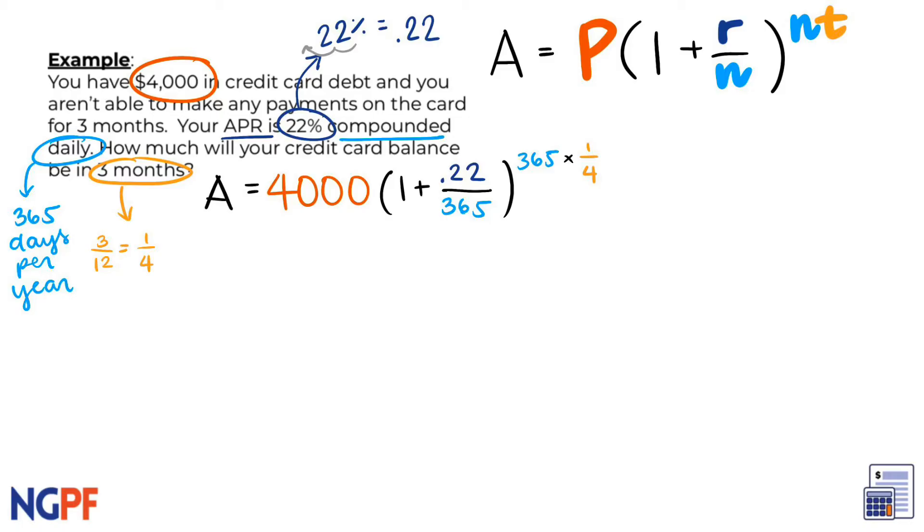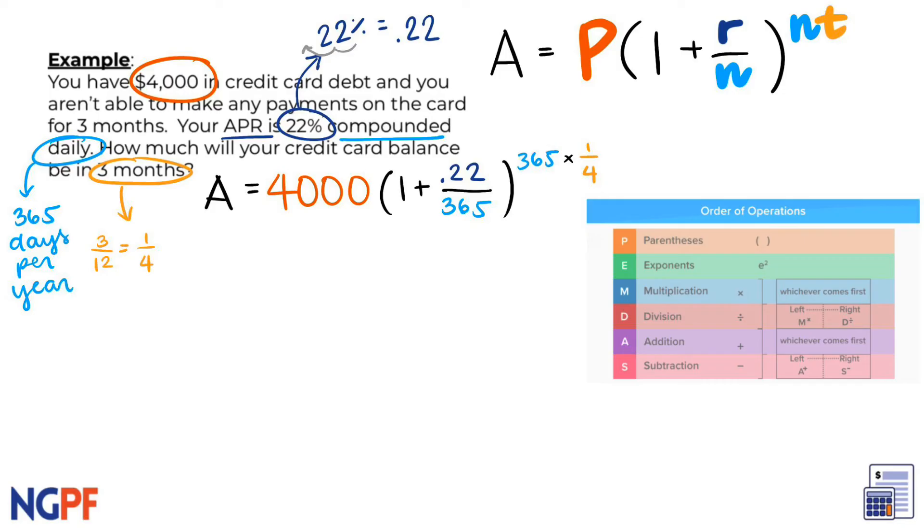Now that we have accurately substituted our variables into the formula, we can use order of operations to solve. First, we can carry out what we have in the parentheses, so we can drop and keep the 4,000.